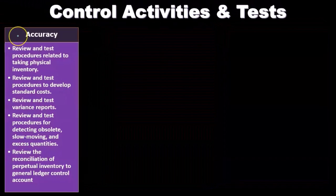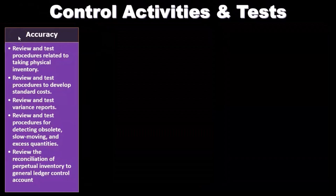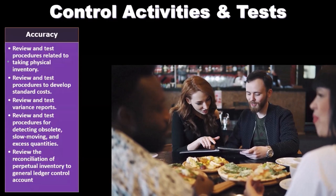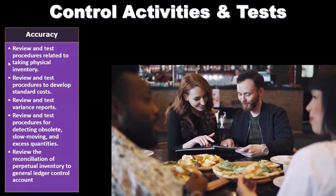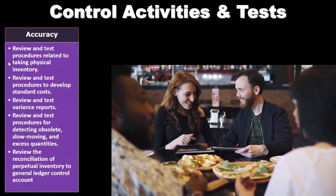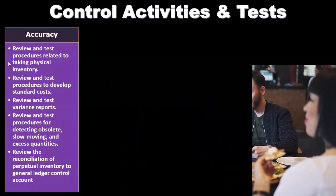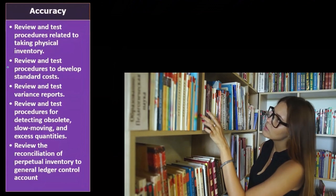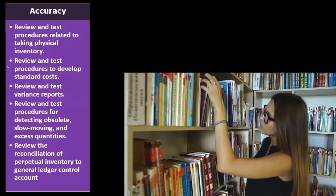Then we have the assertion of accuracy. We're considering the assertion of accuracy — review and test procedures related to taking physical inventory. This is one of the major things in audit. Many new auditors will go out; the company will actually do a physical inventory typically towards the end of the year, and the auditors get to go out and count the physical inventory, which is always an exciting time.